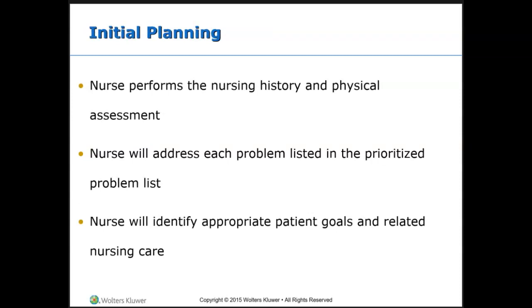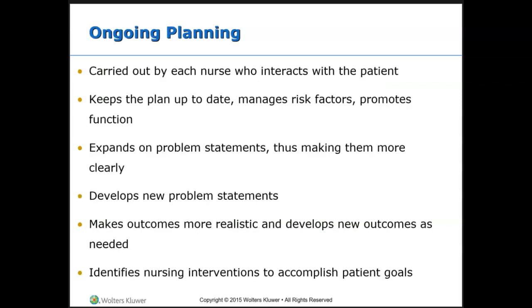Initial planning is developed by the nurse who performs the nursing history and physical assessment, addressing each problem listed in the prioritized problem list and identifying appropriate patient goals and related nursing care. Ongoing planning is carried out by any nurse who interacts with the patient — keeping the plan up to date, managing risk factors, promoting function, helping problem statements be more clearly defined, developing new problem statements, making outcomes more realistic, and identifying nursing interventions that will help the patient reach these goals.